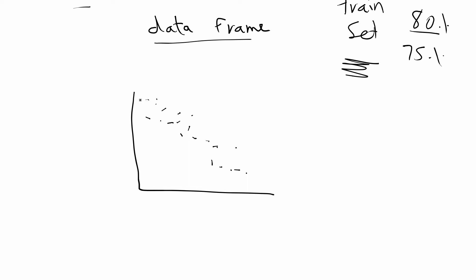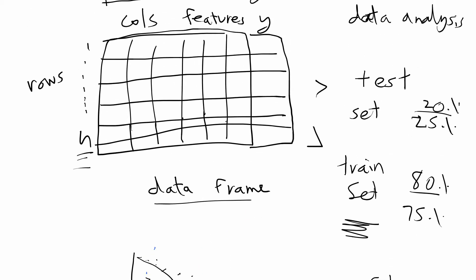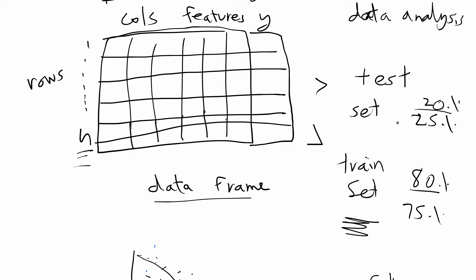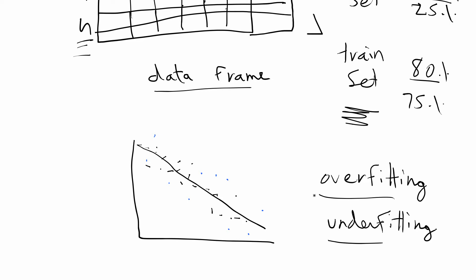In statistics, you never know what the true population looks like — you only get a subsample and can only model using your observed sample. When you fit a model, such as a linear regression, you want it to generalize well to new observations, since in the population there may be additional observations you don't observe. Data splitting helps us avoid both overfitting and underfitting. Without splitting, you might pick a model that works well for your sample but doesn't generalize to the unobserved population.